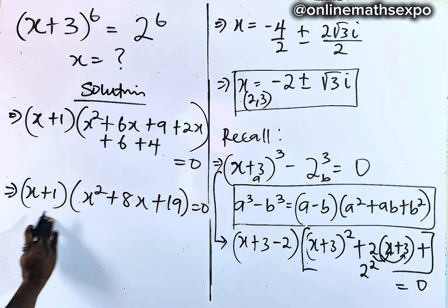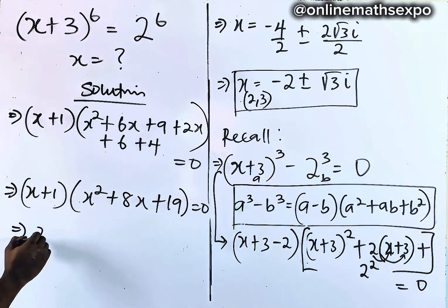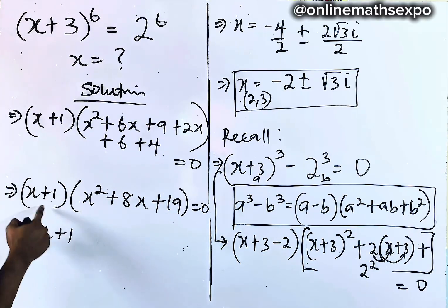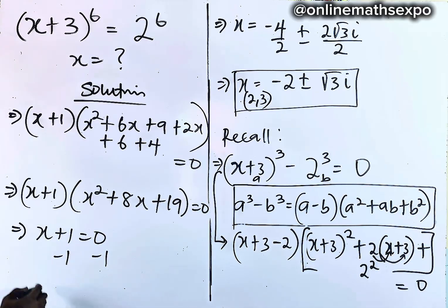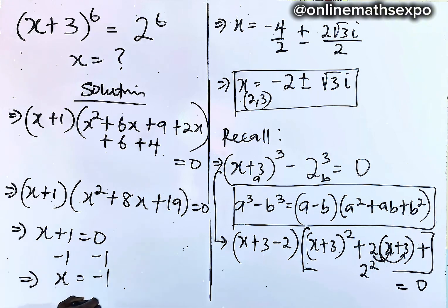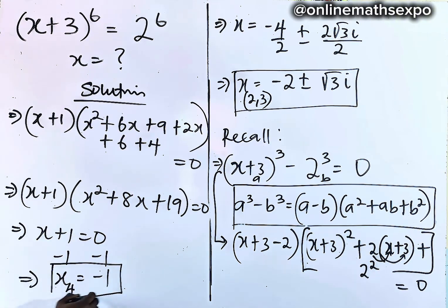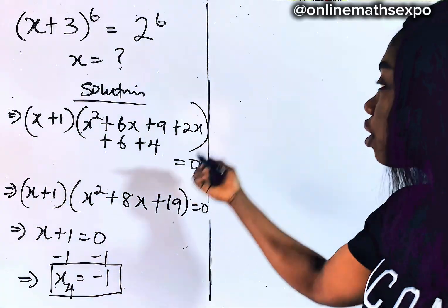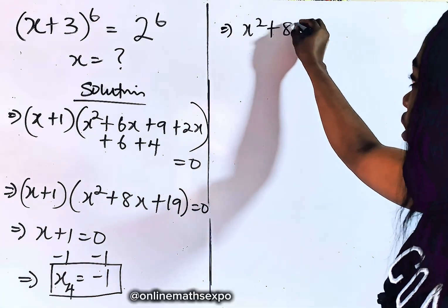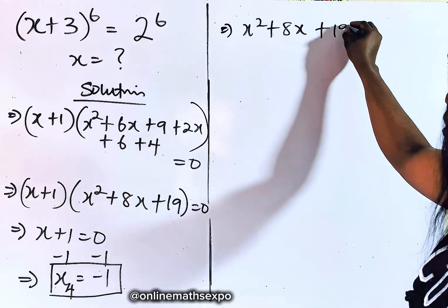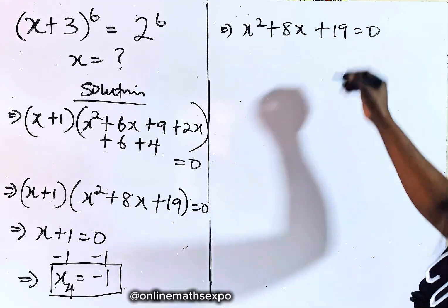Taking the first factor equal to 0: x + 1 = 0, so x = −1. This is the fourth value of x. Now let's solve the second factor. We have x² + 8x + 19 = 0. This is again a quadratic equation, and we'll apply the quadratic formula.